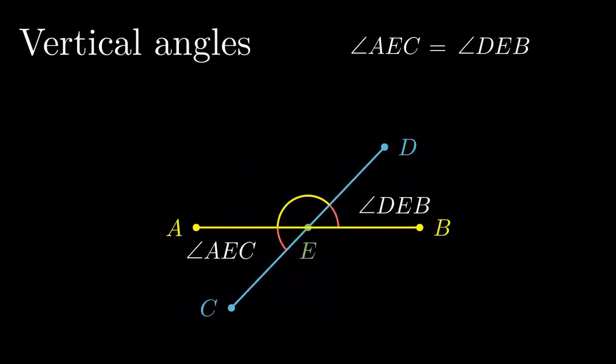When we do that, the equality still holds. Then, the measure of the angle AEC is equal to the measure of the angle DEB. This is a proof.